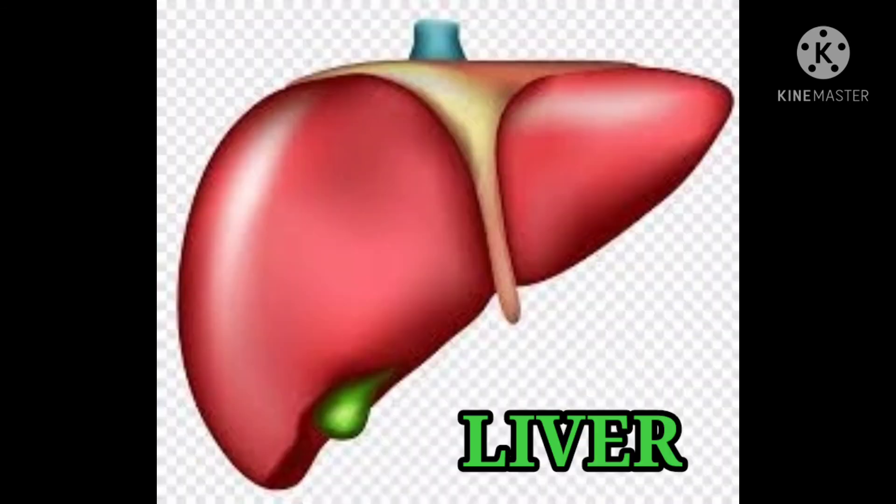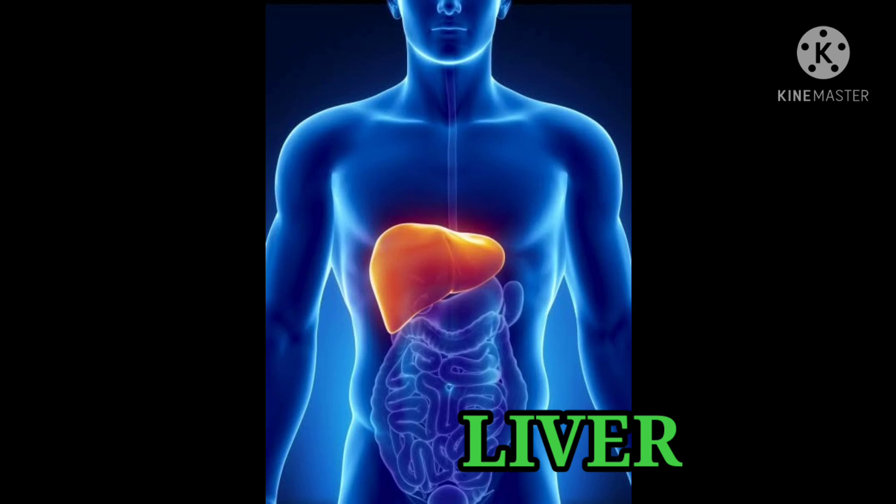6. Liver — liver is a dark red organ on the right side of the abdomen. It is the largest and one of the most important internal organs in our body. The liver helps in the digestion of the food.